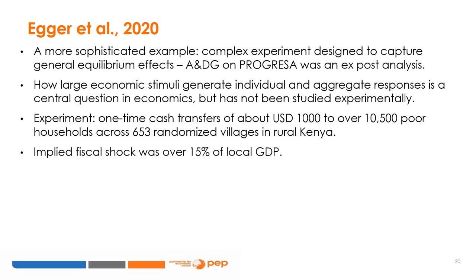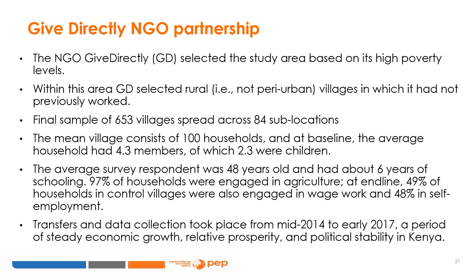The question in this Kenya paper is how large economic stimuli can generate individual and aggregate responses — a central question in economics that has not been studied experimentally. In this experiment, the authors test the effect of a one-time cash transfer of about $1,000 USD, a very large transfer, to about 10,500 poor households across 653 randomized villages in rural Kenya. The implied fiscal shock was over 15% of local GDP — a fairly large helicopter drop of money into these villages. The main difference with PROGRESSA is that this is a one-time large cash transfer, whereas PROGRESSA had monthly transfers over a longer period. This paper is based on the GiveDirectly non-governmental organization.